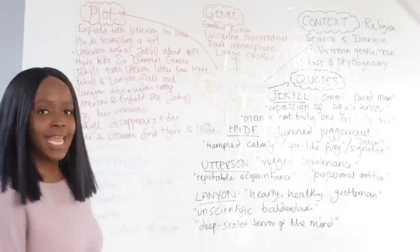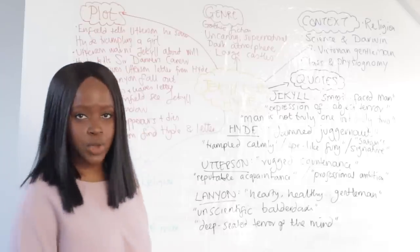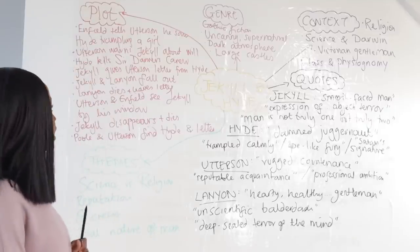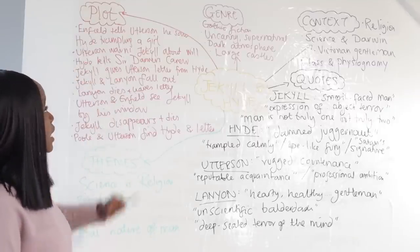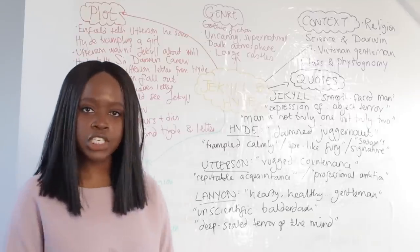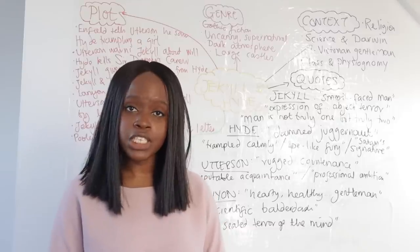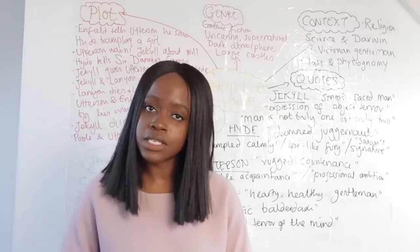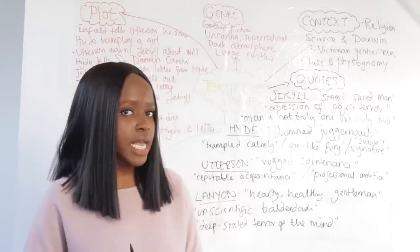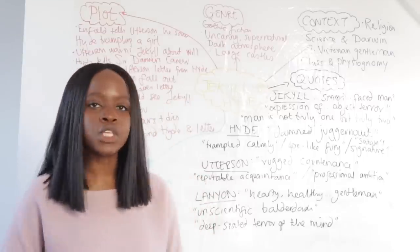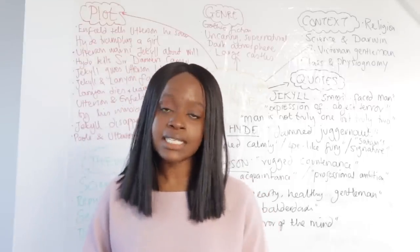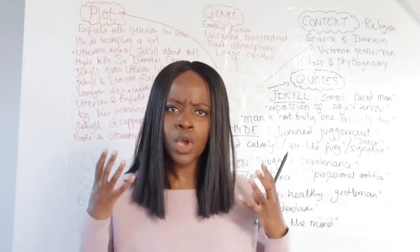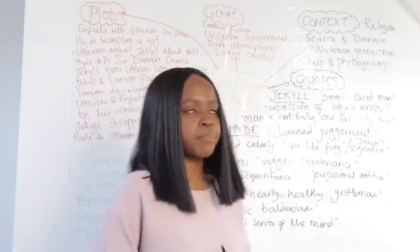Firstly, let's summarise the plot in a nutshell. The novella begins with Utterson and Enfield taking a walk, and Enfield tells Utterson about this strange man, Mr. Hyde, who he saw trampling a little girl very calmly. And of course, what this does is it already sets up Mr. Hyde as somebody who's quite psychopathic — somebody who takes pleasure in other people's pain.